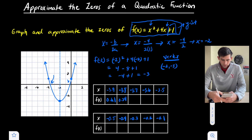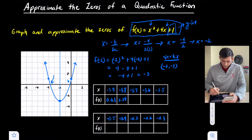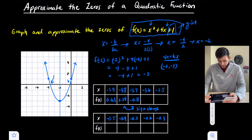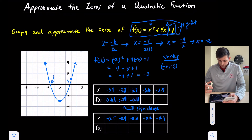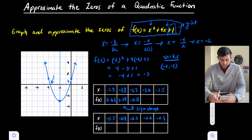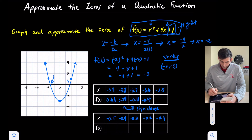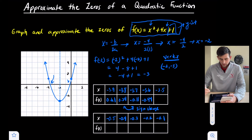Let's keep going. For negative 3.7: (-3.7)² + 4(-3.7) + 1 gives us negative 0.11. We have a sign change — we went from a positive value to a negative value, which means zero must be somewhere in between. Let's also do negative 3.6: (-3.6)² + 4(-3.6) + 1 gives us negative 0.44, still negative. So our zero is somewhere between negative 3.8 and negative 3.7.